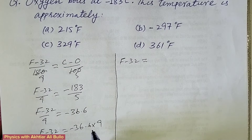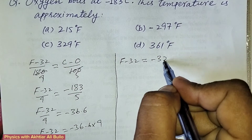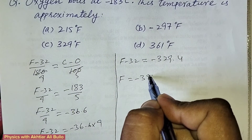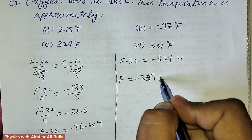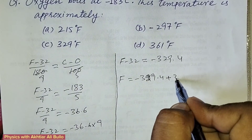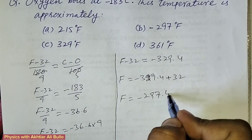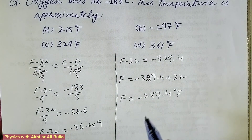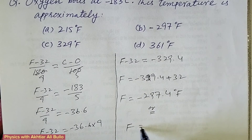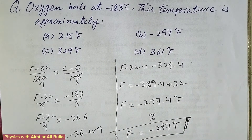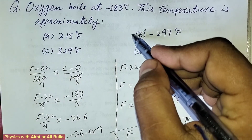So F minus 32 equals minus 329.4. Therefore, F equals minus 329.4 plus 32, which gives F equals minus 297.4 degrees Fahrenheit. The correct option is B: minus 297 degrees Fahrenheit.